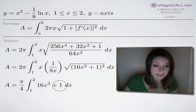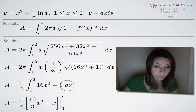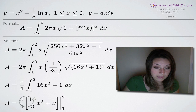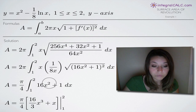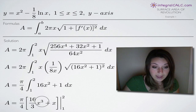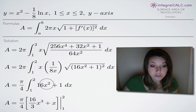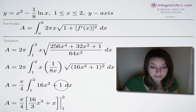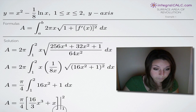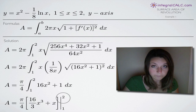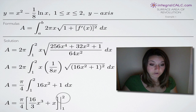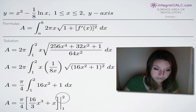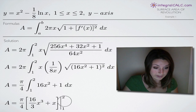That expression is easy enough to integrate. The pi over 4 remains out front. We add one to the exponent — 2 plus 1 is 3 — and divide the coefficient 16 by the new exponent 3, giving us 16 thirds x cubed. The integral of 1 is x. So we evaluate 16 thirds x cubed plus x on the range 1 to 2.